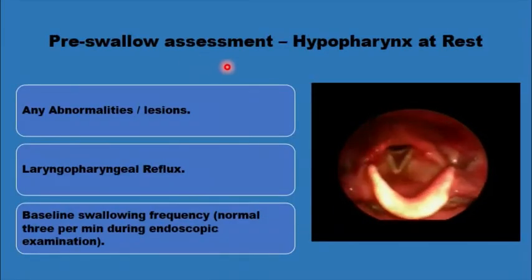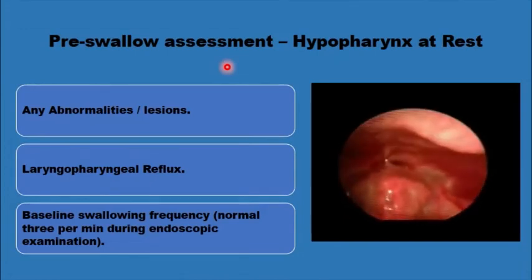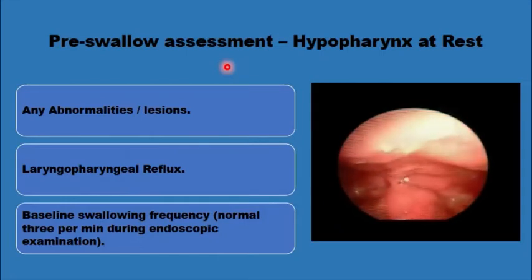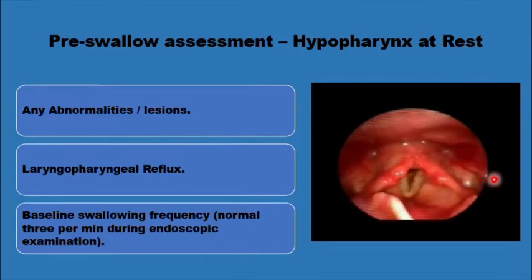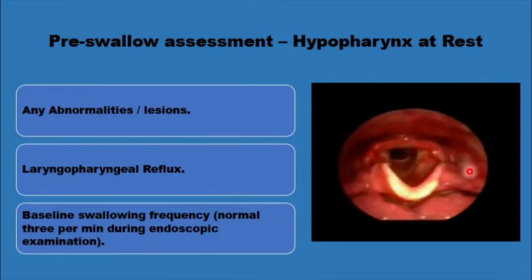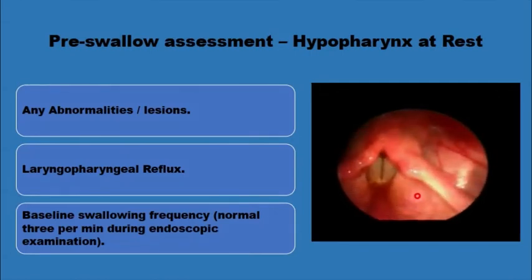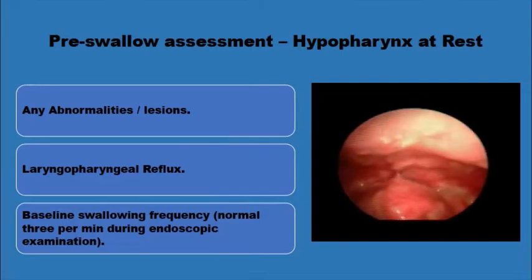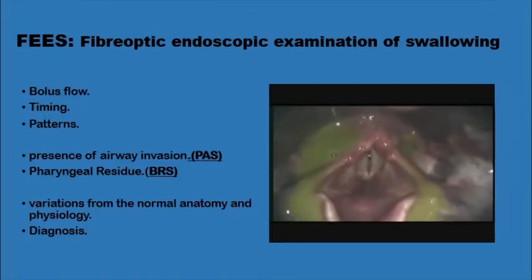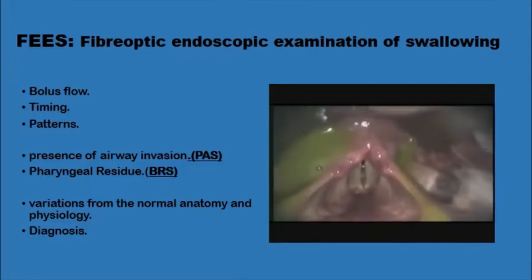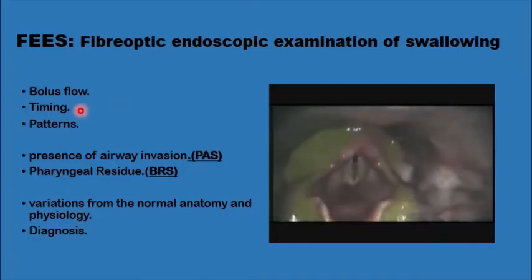Every patient will have a functional endoscopic examination of swallowing (FEES). This starts with examination of the pharynx at rest before introducing any colored food or drinks, to check for possible lesions in the hypopharynx or larynx, vocal cord mobility, retained secretions or pooling of saliva, any signs of laryngopharyngeal reflux, or signs of imminent laryngeal penetration or aspiration. Then colored food or drink is given to the patient to allow endoscopic visualization of how the patient handles food — estimating problems in bolus flow, timing, or patterns.